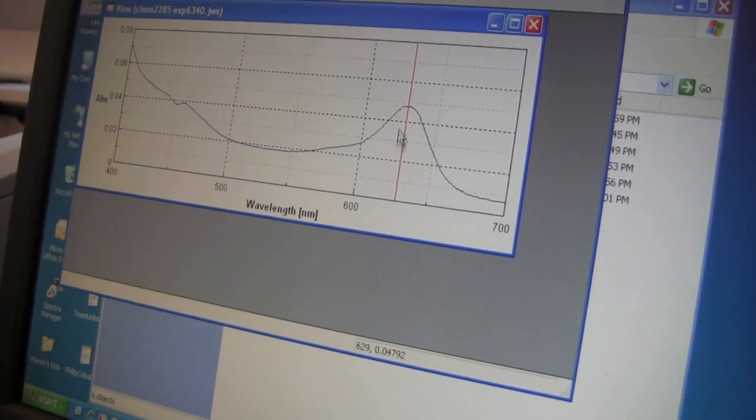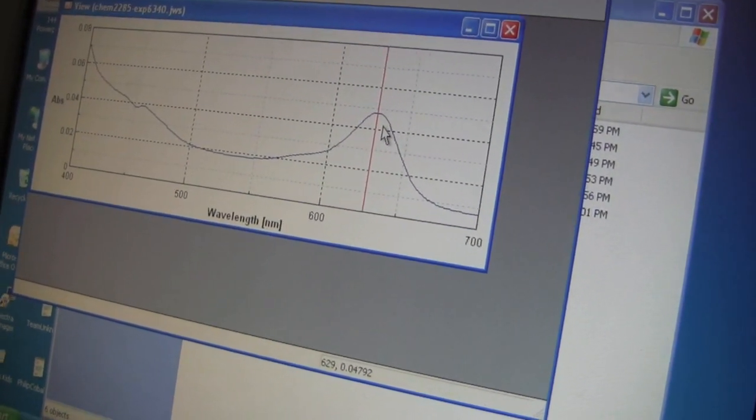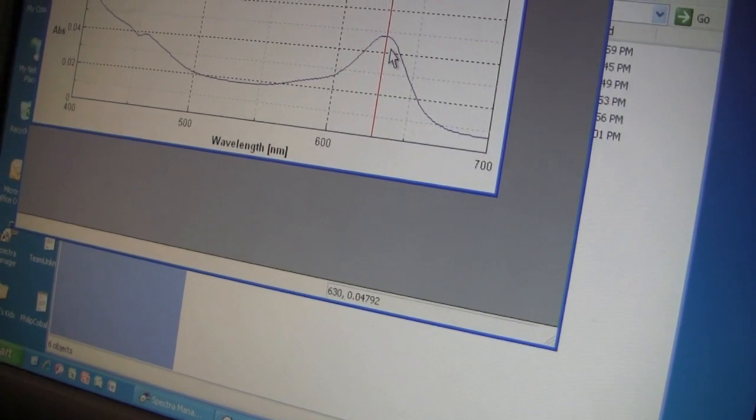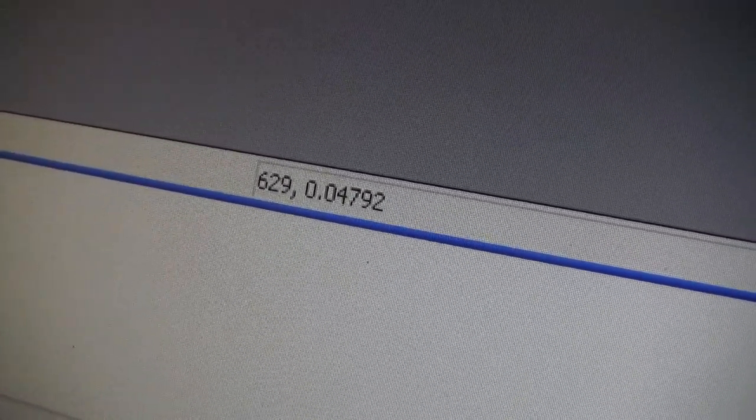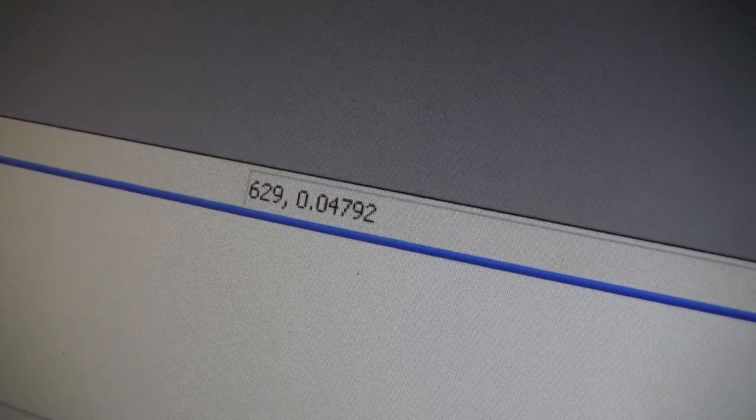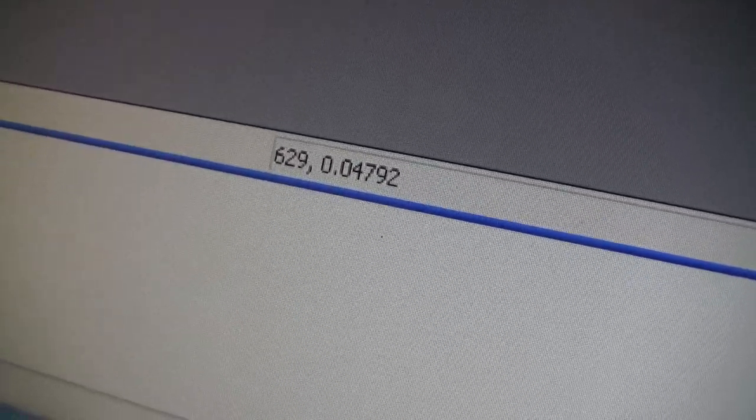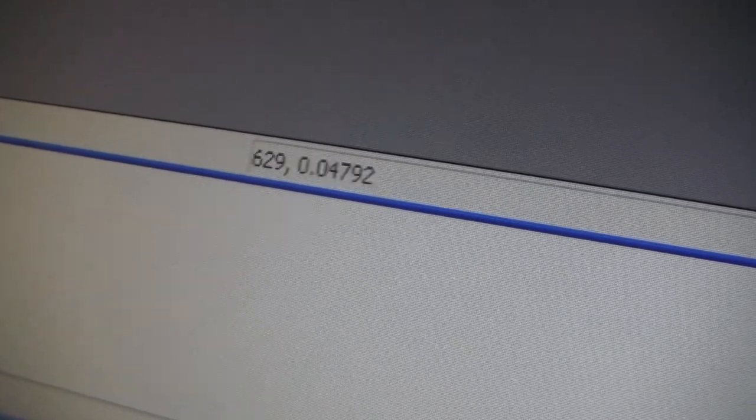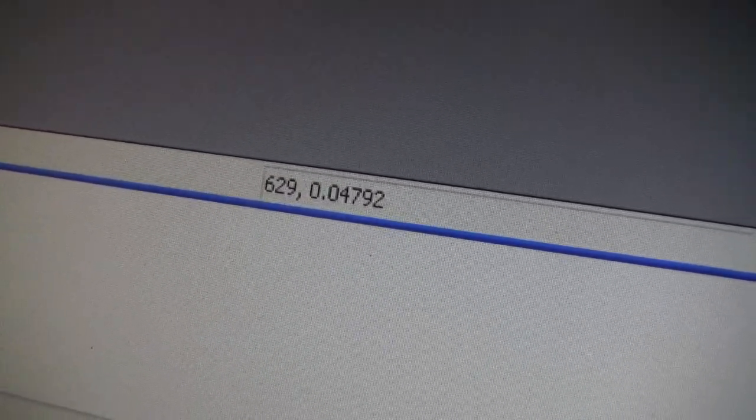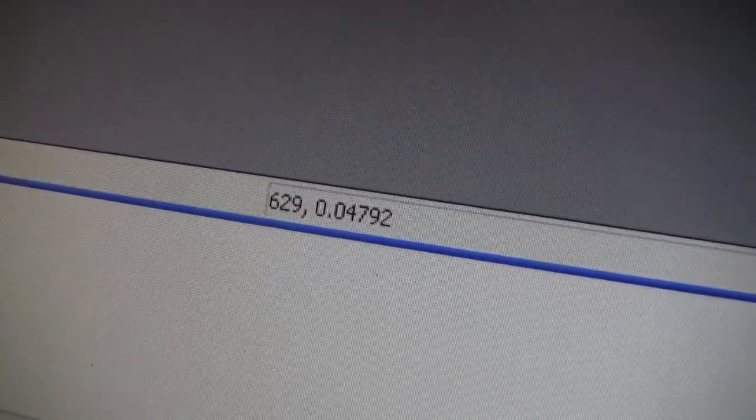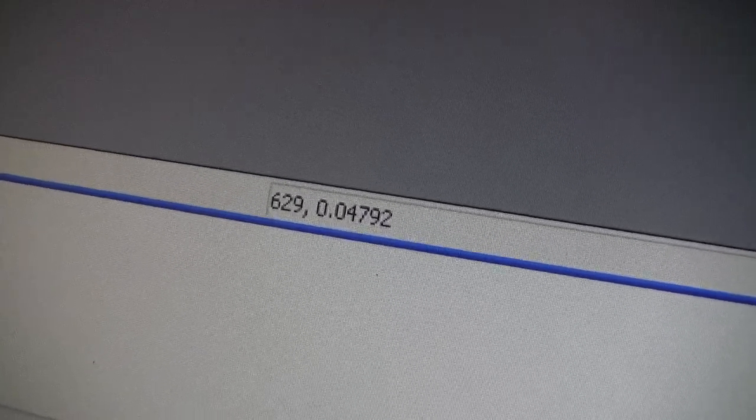Click on the highest peak, then using the left and right arrow keys, push back and forth until the absorbance, which is the number on the right, has decreasing values on both sides. Right here, the wavelength is 629 and the absorbance is 0.04792. Record these values in your lab manual.